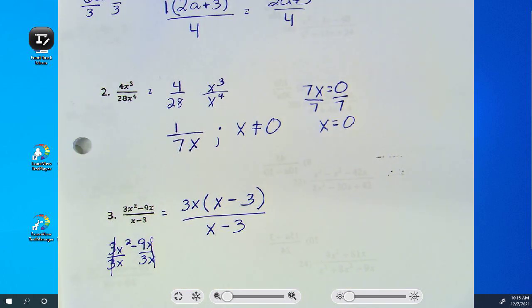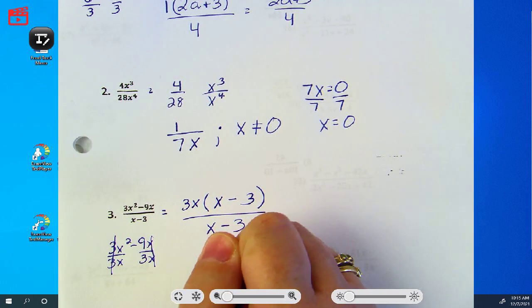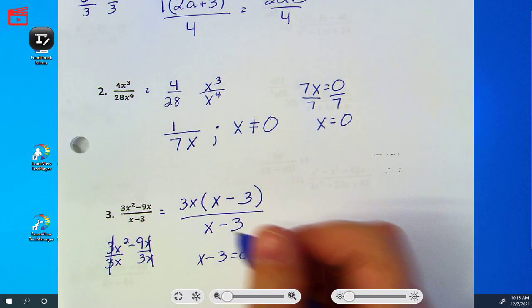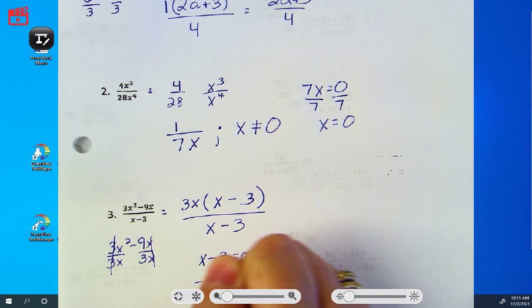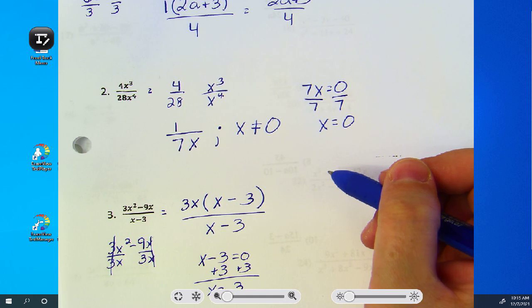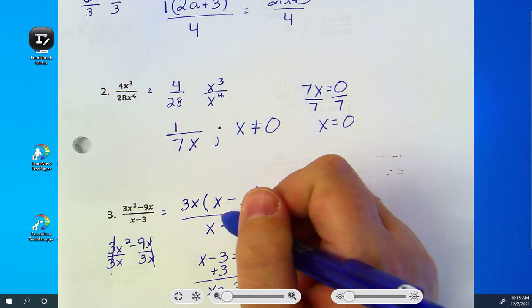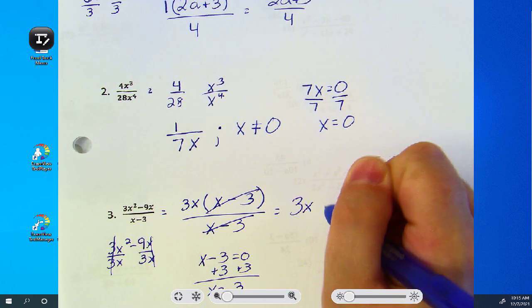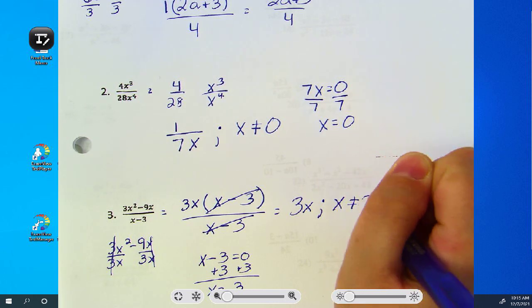Remember, you have to do your restrictions before you simplify. What am I setting equal to zero here? So the opposite of subtracting three is what, everyone? Let's go back up to the problem. What can I cancel out? The x minus three, so I'm left with three x. X cannot equal three.